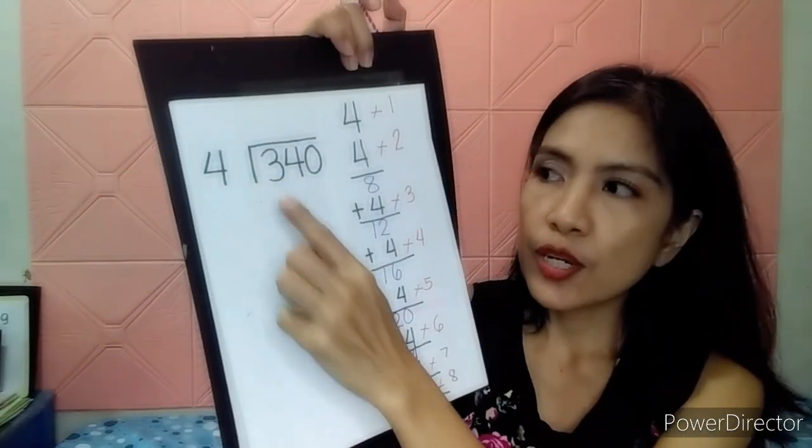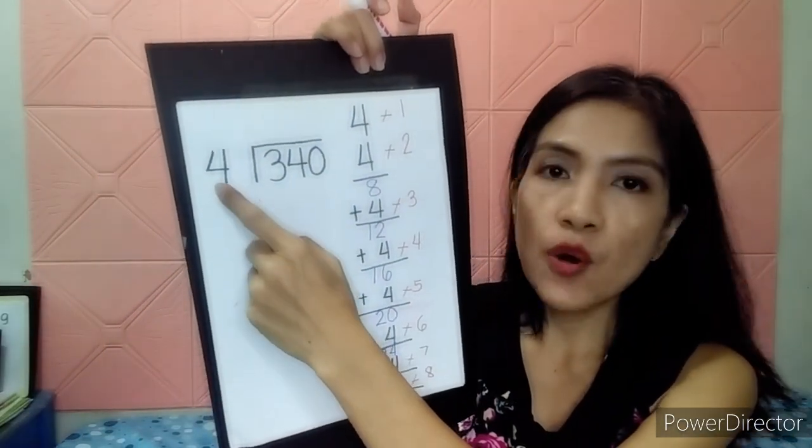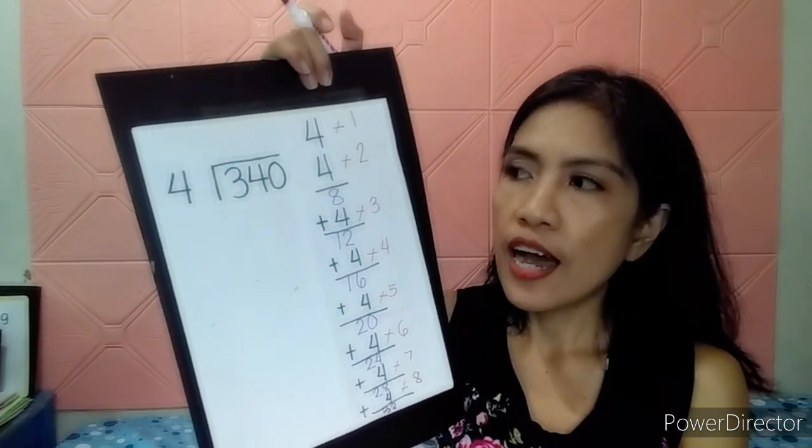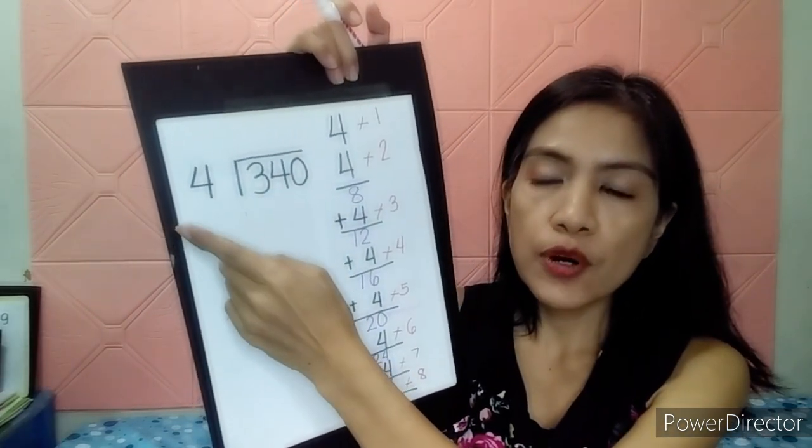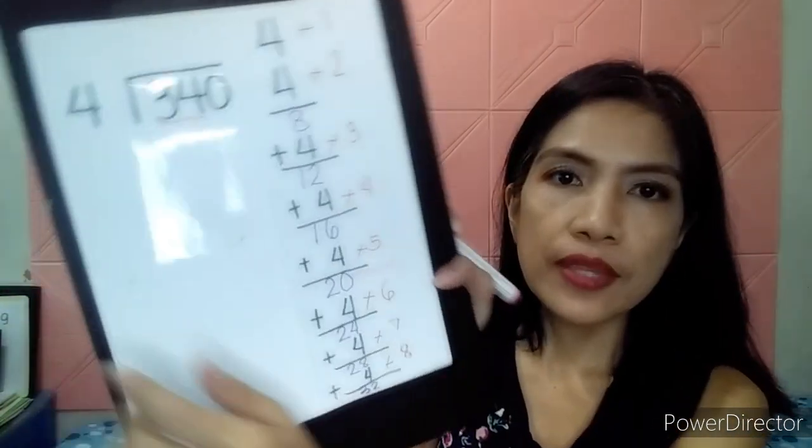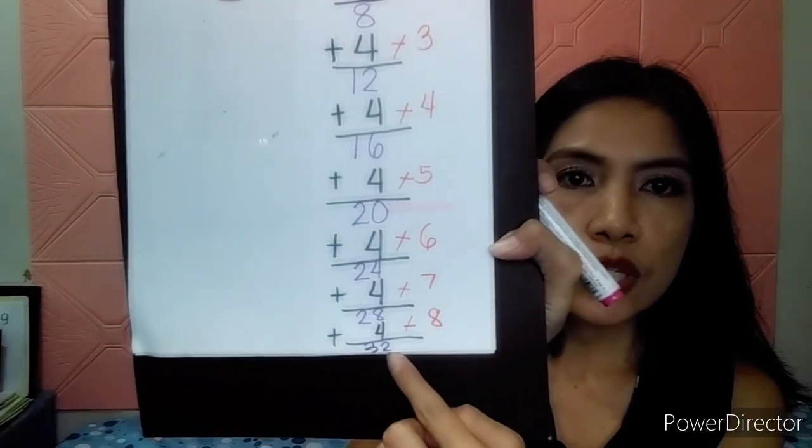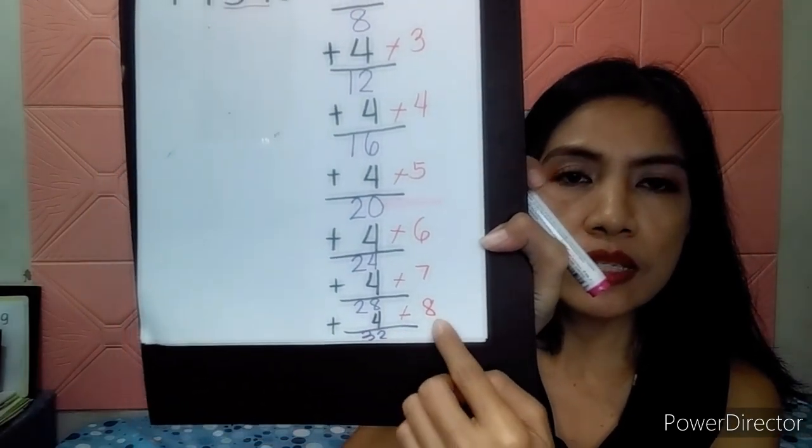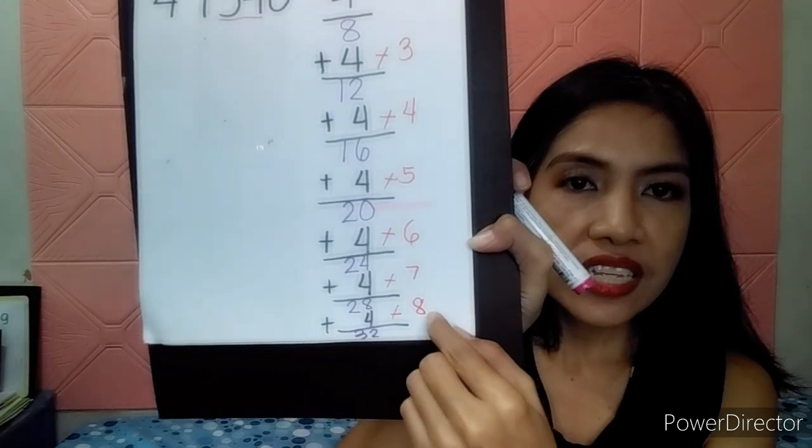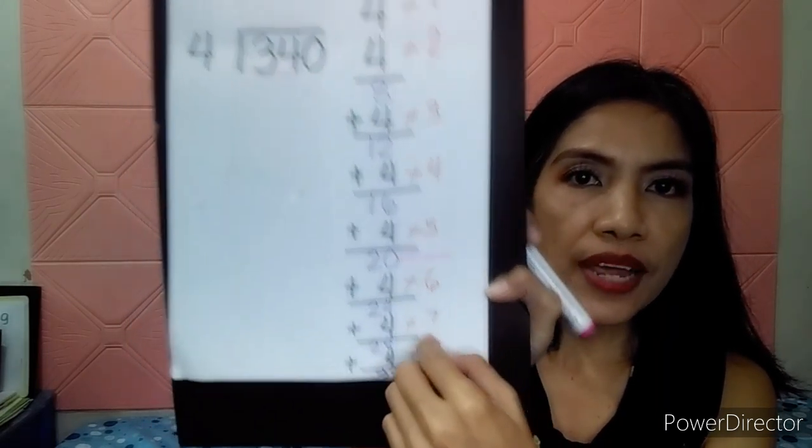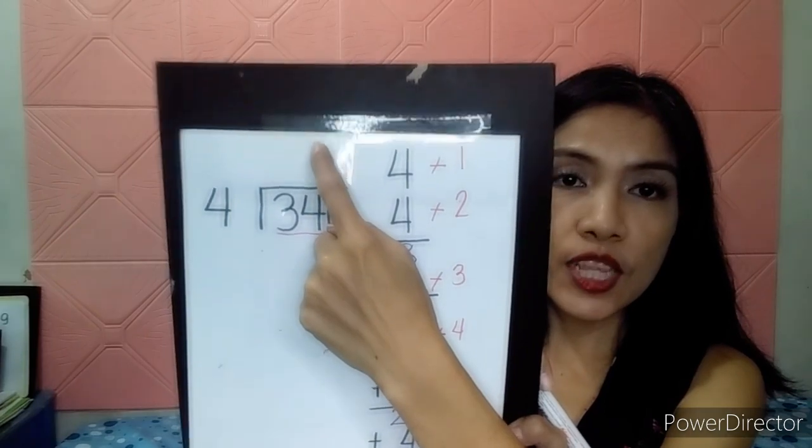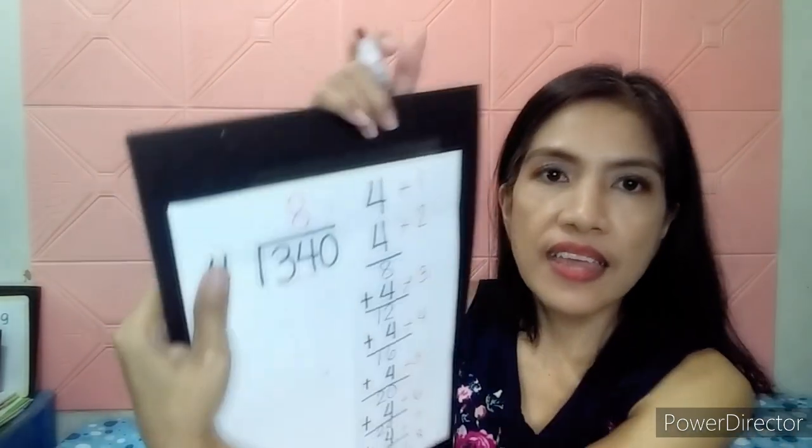And then, I asked her. Can we divide 3 by 4? She said, no. Can we divide 34 by 4? She said, yes. So, where is 34 near? Where's 34 near? 34 is near 32. So, where's 32 near? 8. So, 8. We're going to write number 8 here on the answer. It's 8.